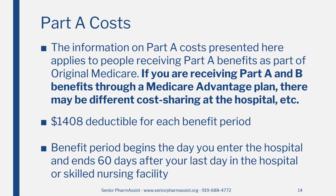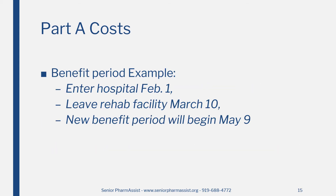If you are admitted to a hospital and you have Medicare Part A, there are costs you will be responsible for. First, you will have to pay a deductible of $1,408 for each benefit period. The benefit period begins the day you enter the hospital and ends 60 days after your last day in the hospital or skilled nursing facility. For example, if you were admitted to the hospital on February 1st and leave the hospital or rehab facility on March 10th, the benefit period would end on May 9th. If you had to be admitted to the hospital again after May 9th, you would have to pay another charge of $1,408 as a new benefit period would start.